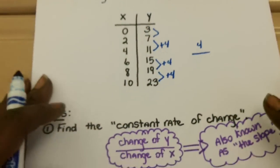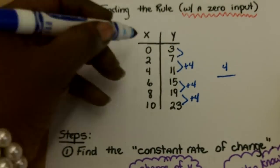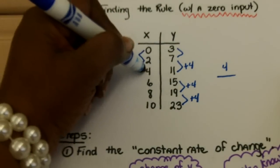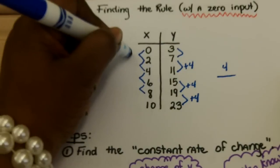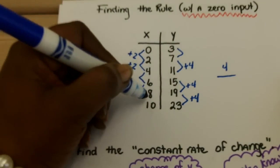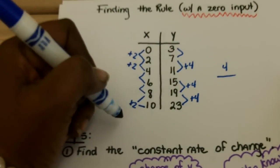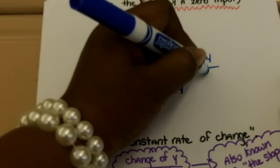And we're going to divide that by the change of the x's. So I'm going to go to the inputs and look for its pattern. We went from 0 to 2, 2 to 4, 4 to 6, 6 to 8. So it looks like each time it's increasing by 2. And we can check it down here. 8 plus 2 is, in fact, 10. So the change of the x's would be 2.